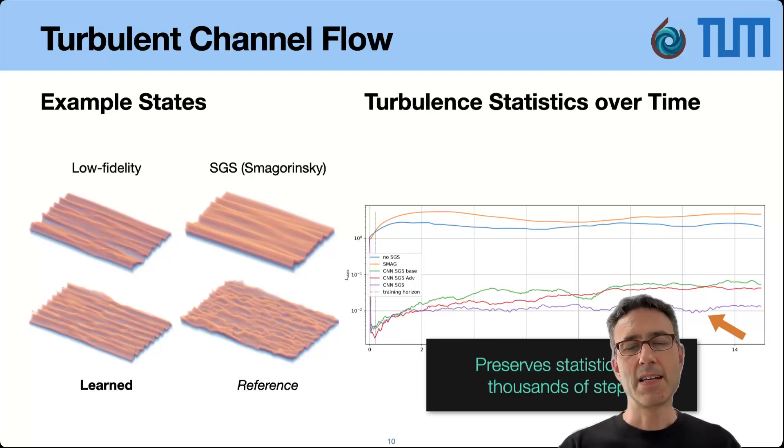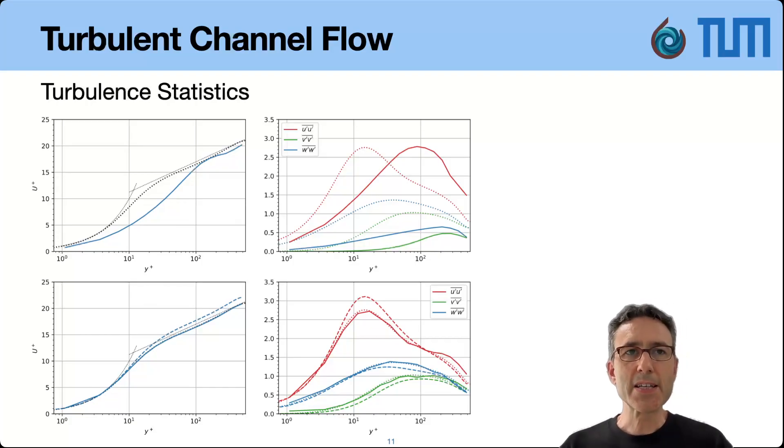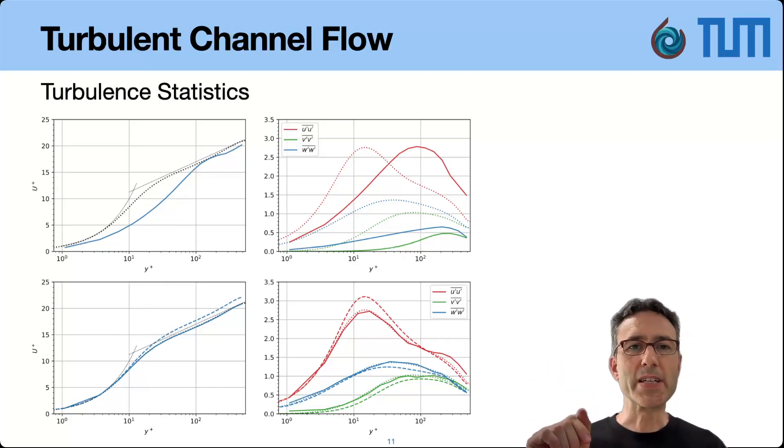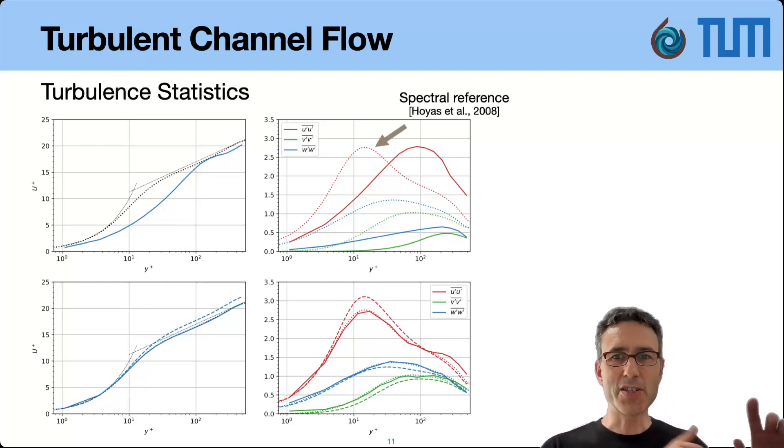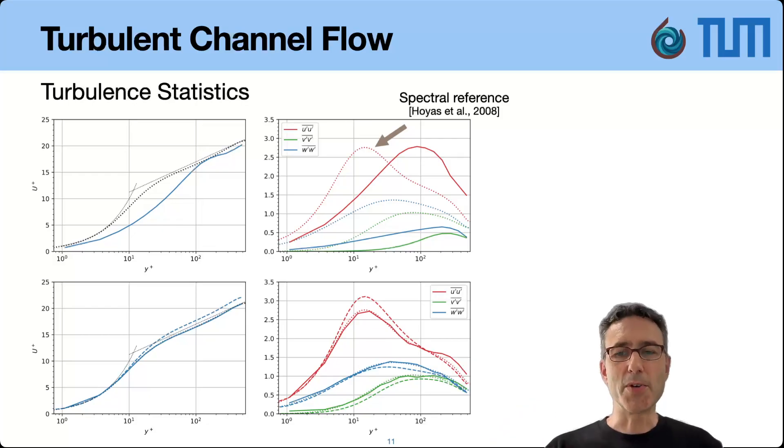Let's look at some more details here so you can, you'll find a bit more details of the statistics. For the experts in the field this is really important to get right because this is a super classic case. So the mean on the left is actually not so interesting, that is quite easily matched although the lower solver at the top doesn't do a very good job. And if you for a moment look at the top only, the dotted lines are actually this spectral solver, the reference. The solid lines at the top are the Smagorinsky model.